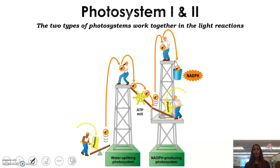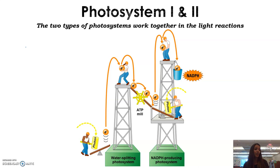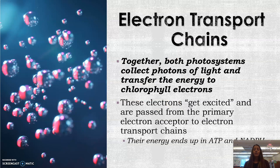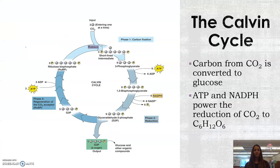Within photosynthesis there are two photosystems that work together as part of the light reaction. You can follow the little orange electron in the diagram to see how it's moving — it goes from the water-splitting photosystem into the NADPH-producing photosystem, which is how we ultimately get that energy to power the dark reactions. The electron transport chains are involved with those photosystems, transferring light energy into something the plant can use. This is how we get ATP and NADPH.